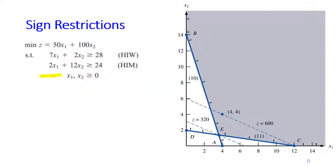Last but not least, as always, we need to put the sign restrictions. We cannot put a negative number of ads on the TV, so X1, X2 must be greater than or equal to 0.